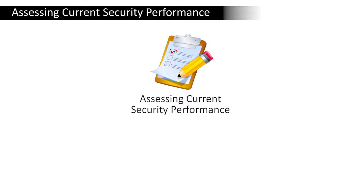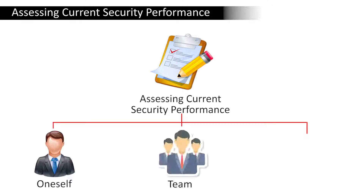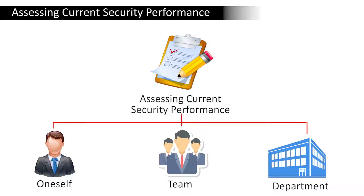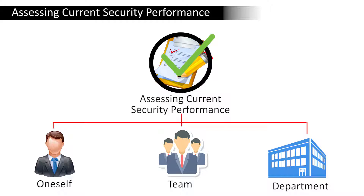The third part is assessing the current security performance. This evaluates the performance of the existing security structures, which means evaluating the performance of oneself, a team, or a department. This is where an external audit can prove additional value because it ensures that no internal bias is affecting the outcome of the audit.